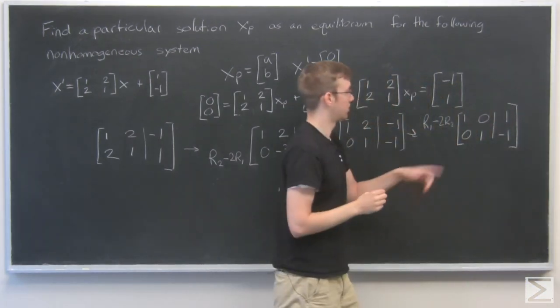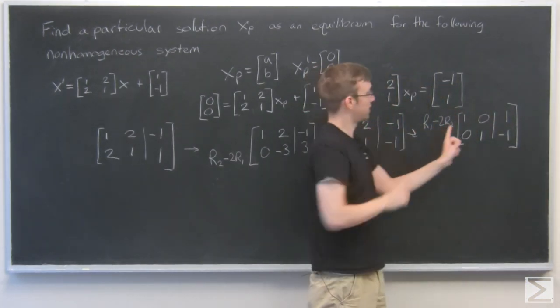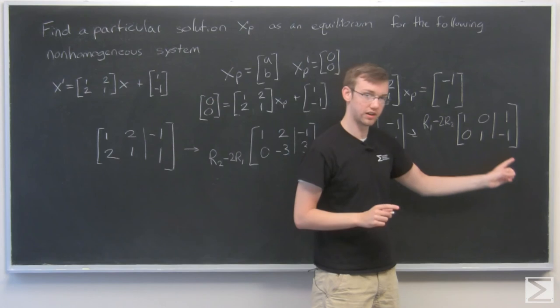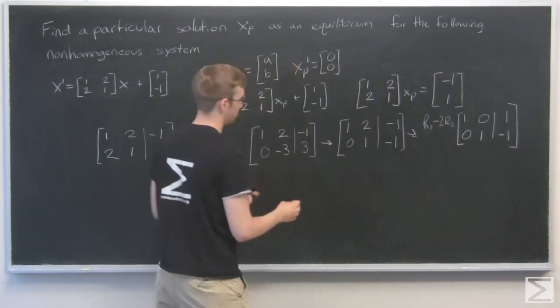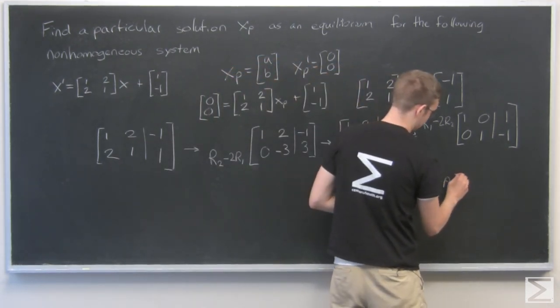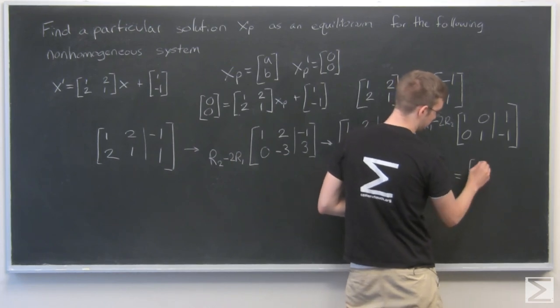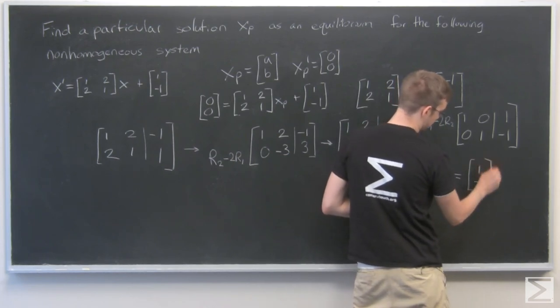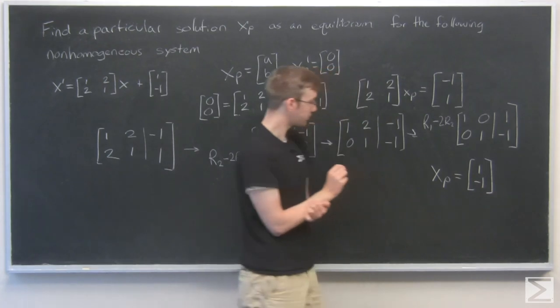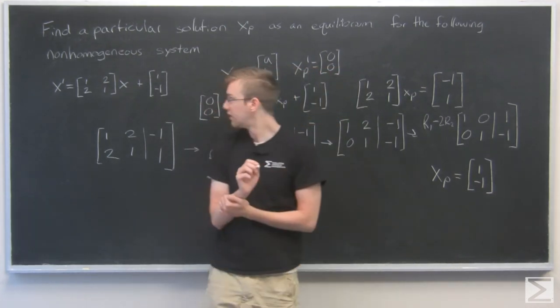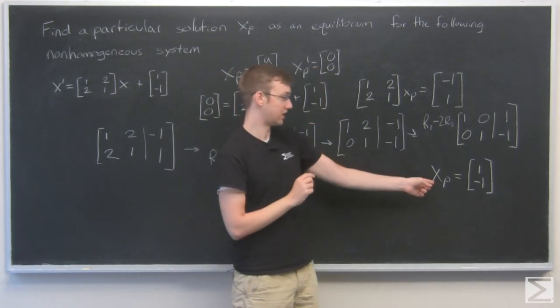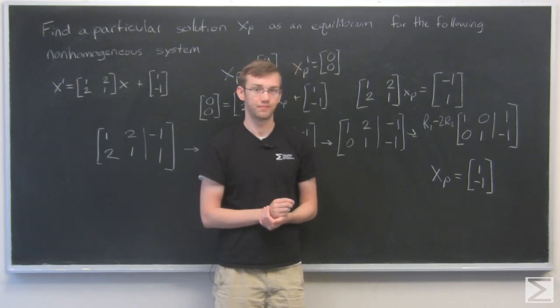So my a value is 1 and my b value is negative 1, so my xp is just the vector 1 minus 1. So that's all we had to do, here's our final answer, xp is 1 minus 1.